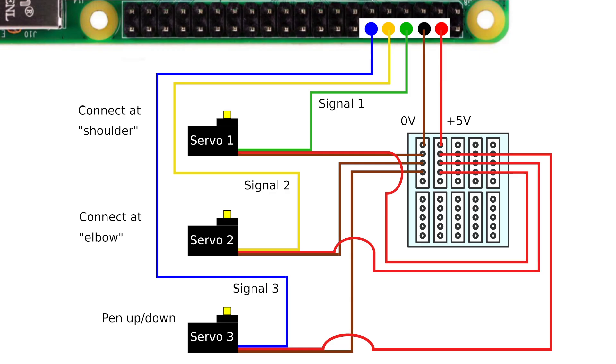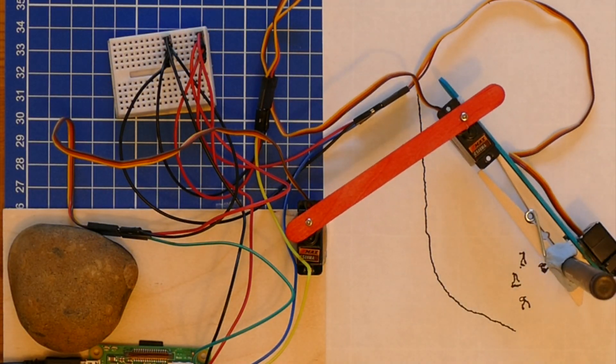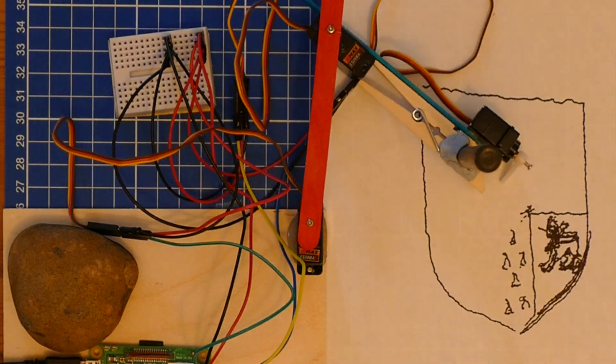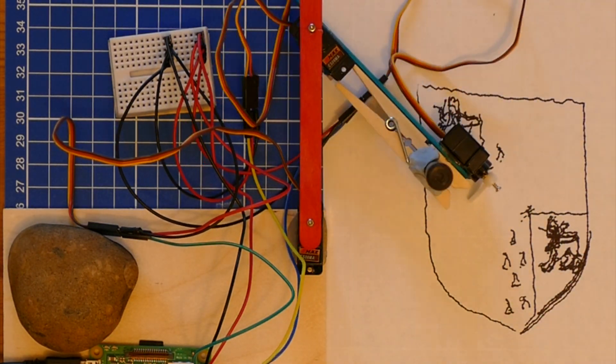Using jumper wires and the breadboard, we connect everything together so the Pi can talk to the servos. That's it! You can now use Daniela's software to calibrate the brachiograph and start producing your own works of robot art.